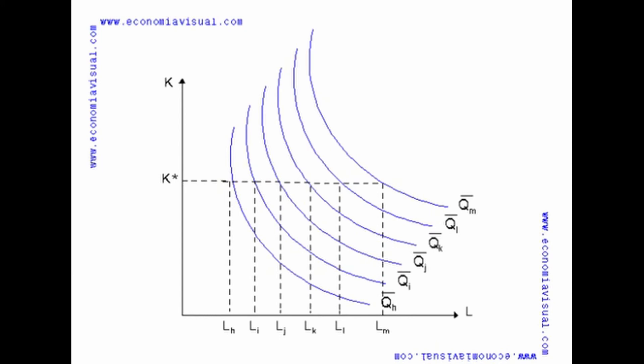From there, we can deduce that on the infinitely dense map of Isoquants, those Isoquants furthest away from the origin will represent the highest level of production.